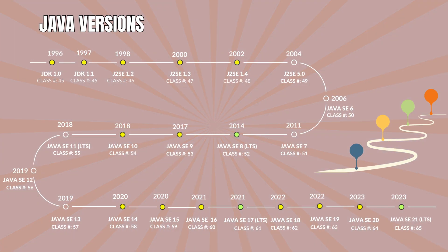Java has gone through several major versions, each introducing new features, improvements, and updates. Since Java version 9, it started releasing every six months. Long-term support (LTS) versions are designated every three years; these LTS releases receive extended support and updates, making them suitable for stable and long-term use in production environments. The LTS releases so far are Java 8, Java 11, Java 17, and Java 21. Oracle has continued to lead the development and evolution of Java, overseeing major releases and updates since they acquired Sun Microsystems in 2010. A summary of all Java versions released so far is presented here.